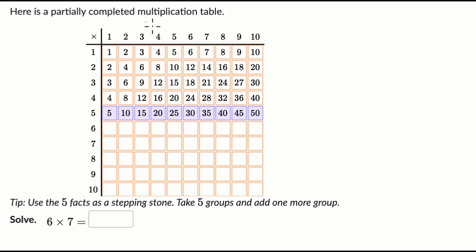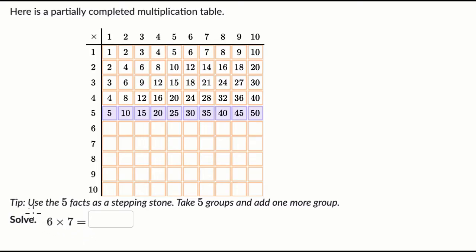Here is a partially completed multiplication table. We can see the one times tables, then the twos, threes, fours — it goes all the way to fives. They want us to solve six times seven, and they tell us to use the five facts — those are the ones highlighted in purple — as a stepping stone.